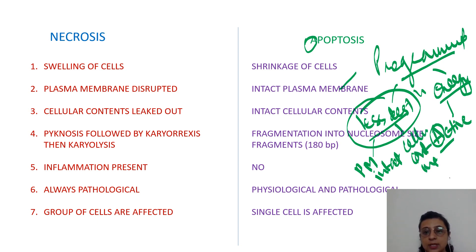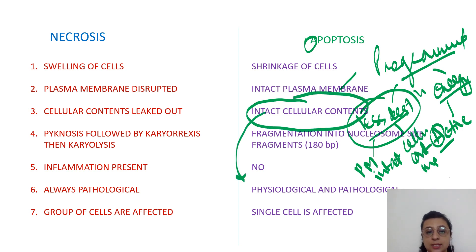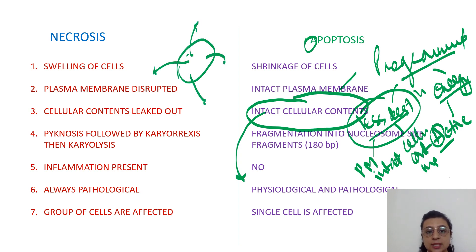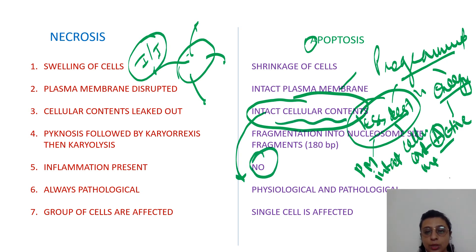Because the cellular contents are intact, there is no inflammation, because inflammation occurs due to cellular contents leaking out — which is what happens in necrosis, inciting an inflammatory reaction. So no cellular content destruction here means no inflammation.